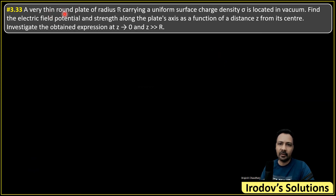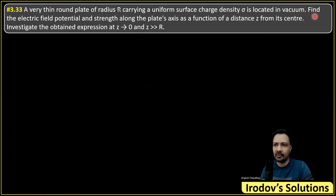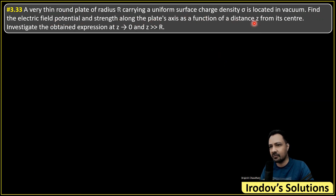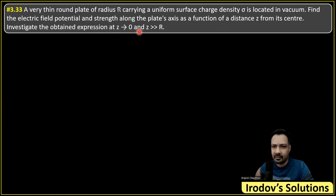The question states: a very thin round plate of radius R carrying a uniform surface charge density sigma is located in vacuum. Find the electric field potential and strength along the plate's axis as a function of distance z from the center. Investigate the obtained expression at z tending to 0 and z much much larger than the radius of the disk.